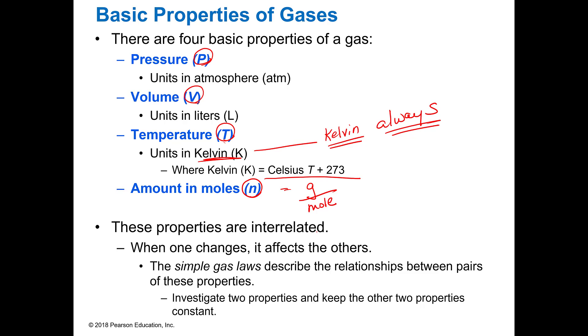So anytime you work a gas problem you must make sure that you convert it to Kelvin. And if you don't know, Celsius plus 273 is going to give you your Kelvin temperature. And then the amount is going to be the amount in moles which is the same as grams per mole. So the periodic table will have some numbers with decimals that tell you how many grams there are in one mole of a substance.